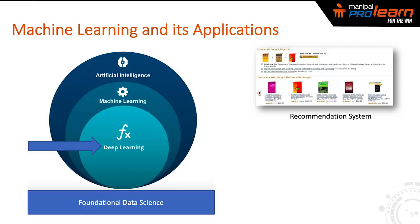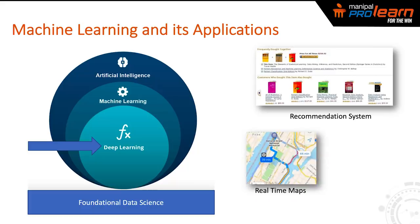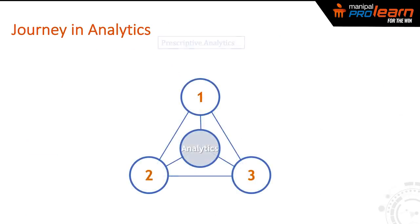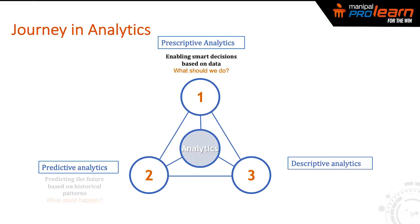Applications of machine learning include recommending the right set of items when you shop on Amazon or Flipkart. Machine learning can also help you reach your destination on time when you use Google Maps with real-time data feed. It can also help you get the desired food when you order on food delivery platforms like Swiggy, Zomato, and others.